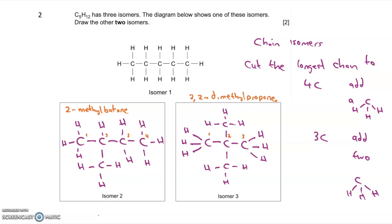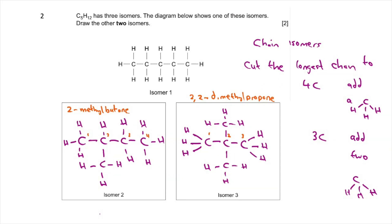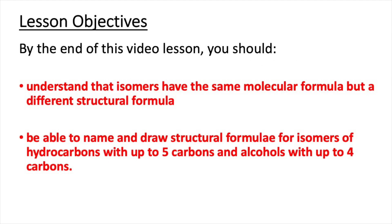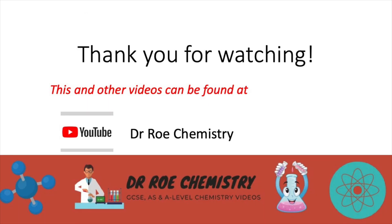So those are my three isomers. If you had 2-methylbutane and 2,2-dimethylpropane drawn correctly you would get two marks. That concludes this video lesson. After watching this video you should now understand that isomers have the same molecular formula but a different structural formula, and you should be able to name and draw structural formulae for isomers of hydrocarbons with up to five carbons and alcohols with up to four carbons. This and other GCSE, AS and A-level chemistry videos can be found on our YouTube channel, Dr O Chemistry.